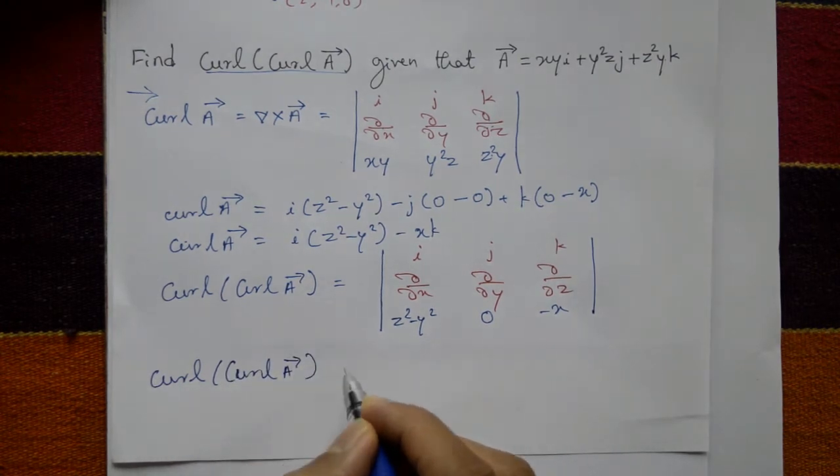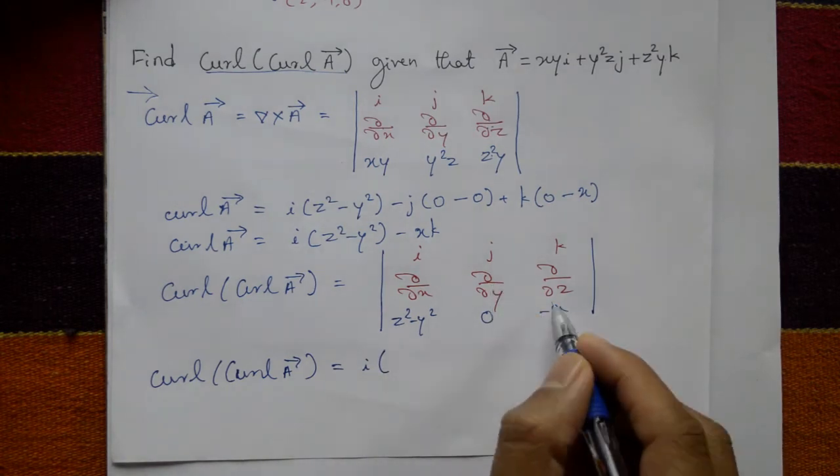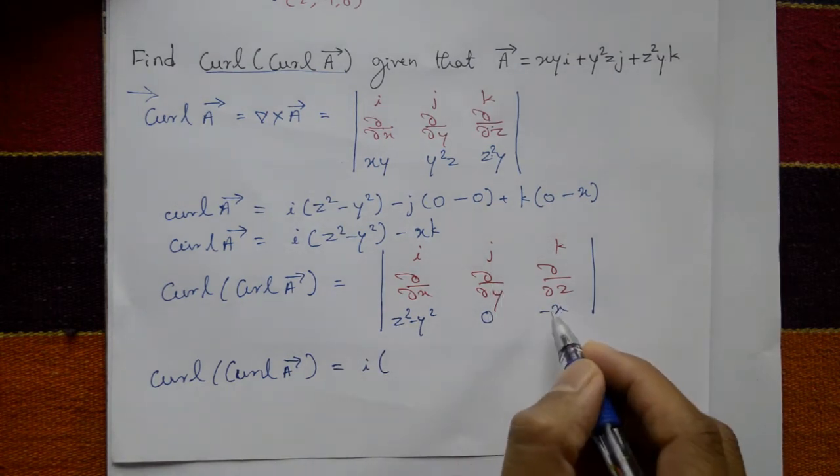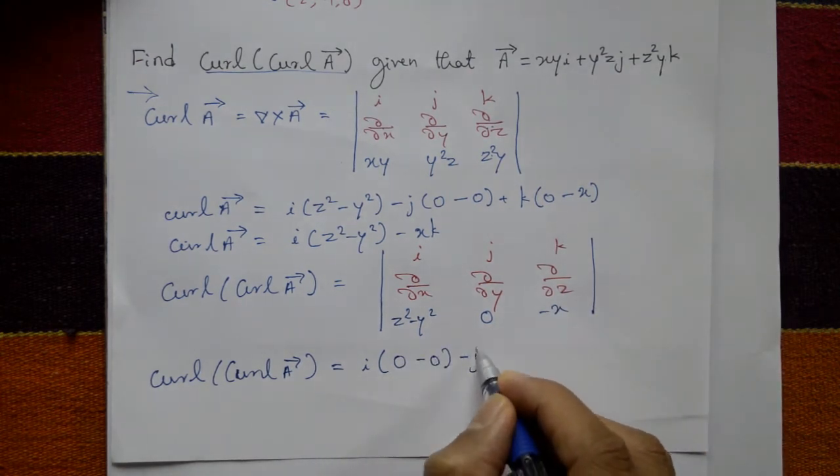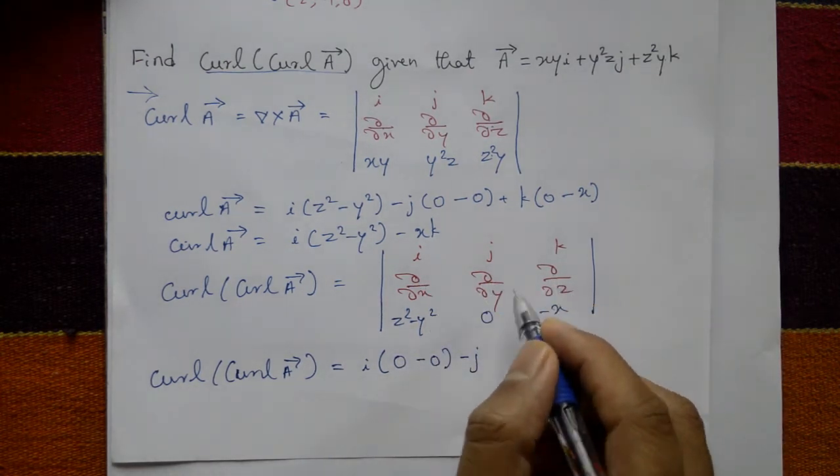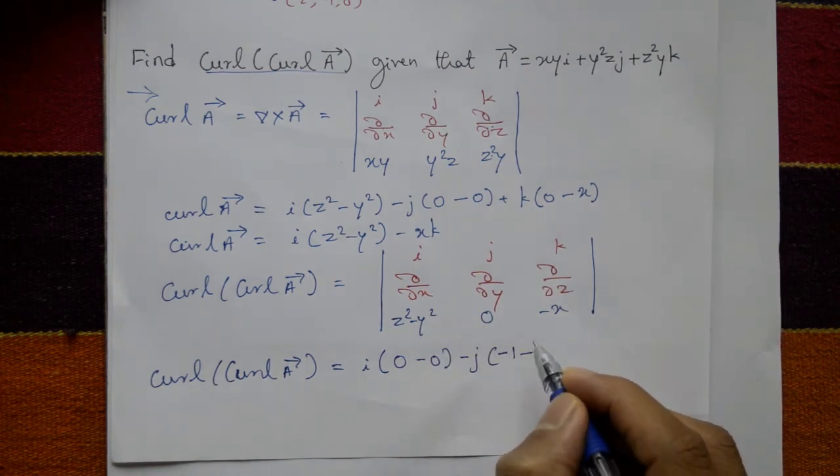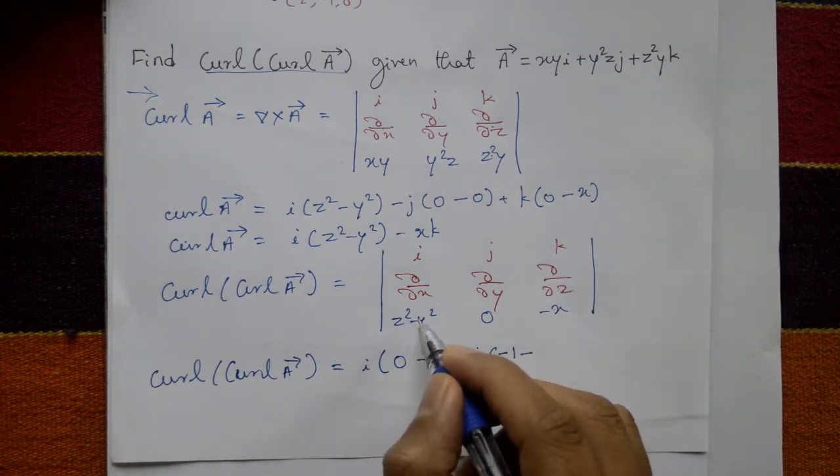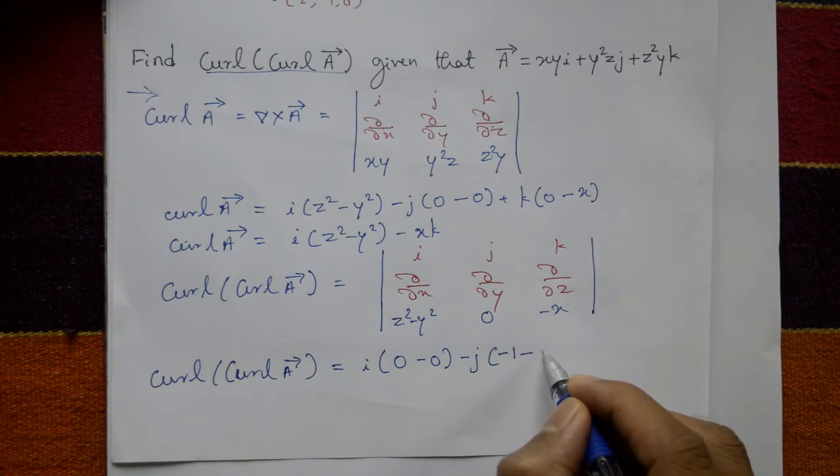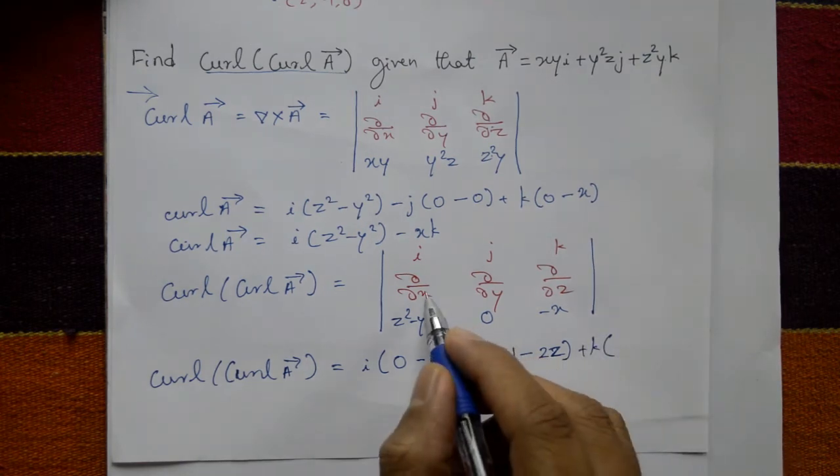Curl of curl of A is equal to i into, differentiate this one with respect to y partially, no y variable means zero, and this is zero. Minus j, taking this one, differentiate this one with respect to x partially means minus one. Minus sign, differentiate z squared minus y squared with respect to z means 2z only.